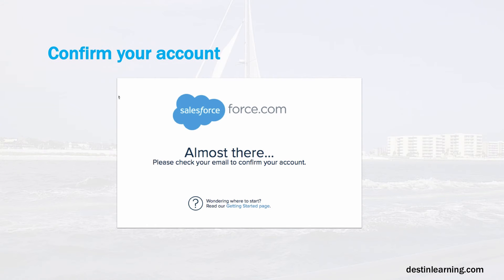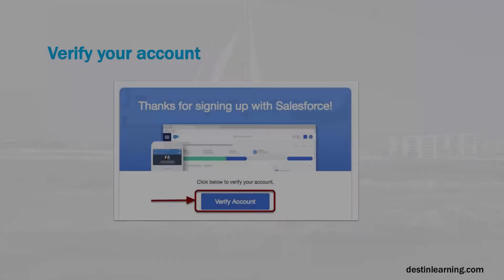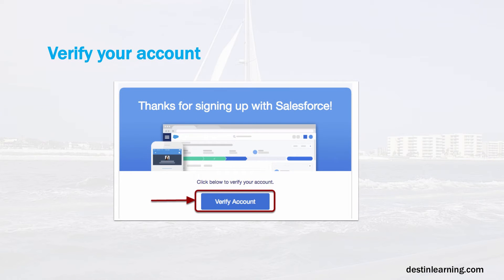For the next step, a confirmation message is going to be sent to your email account. There's a message that pops up on the screen alerting you that a confirmation message is on the way. So go to your email and open it up — I've shown you here what the email will look like that you get from Salesforce. Click on the verify account button.